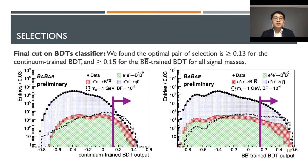After the training and testing, we found the optimal cut for QCD continuum background to be 0.13 and for the B-Bbar background to be 0.15, which we can apply to all the masses due to the fact that our BDTs are not biased with respect to axion-like particle masses. An example of axion mass of 1 GeV is shown in the figure. We can see that not only after the cut the signal and background shapes are distinguishable, but also that the Monte Carlo simulation is in very good agreement with the data.